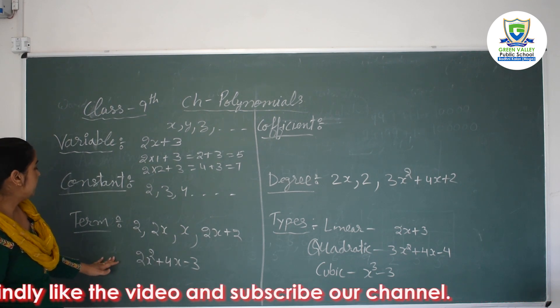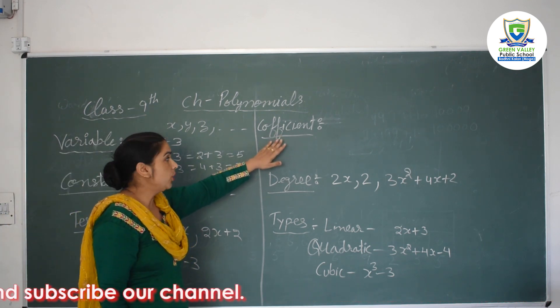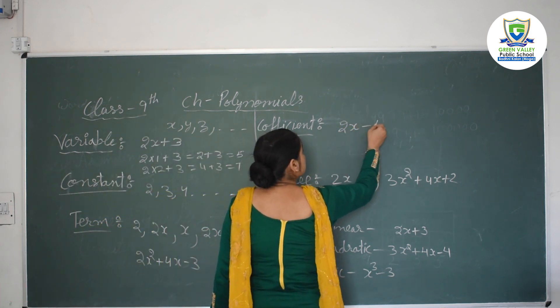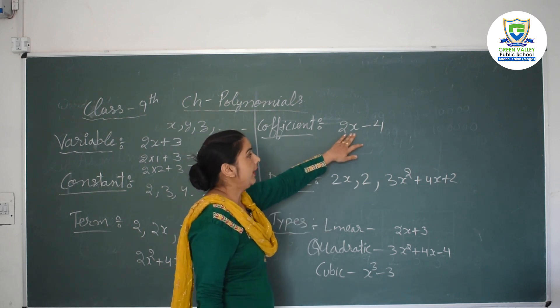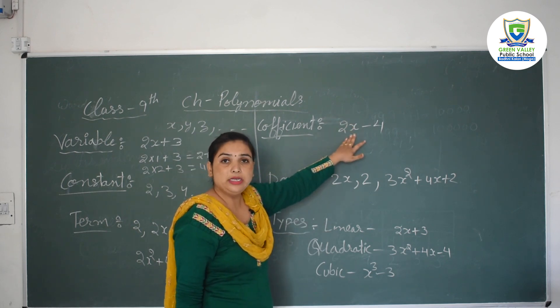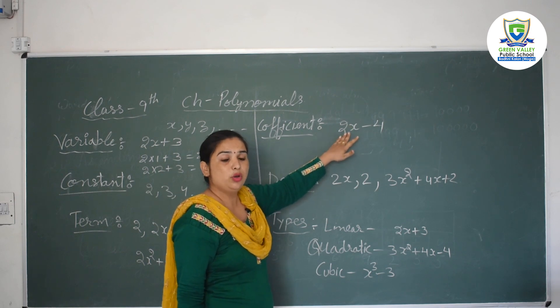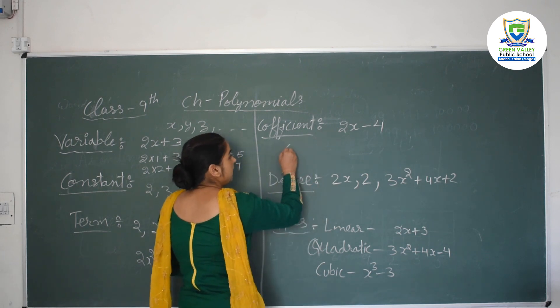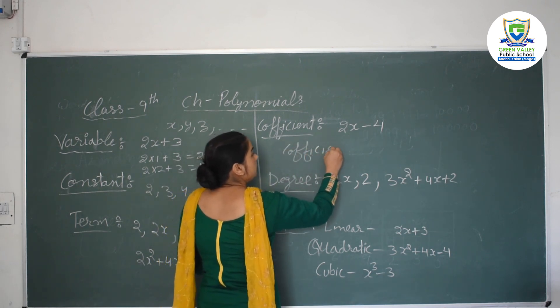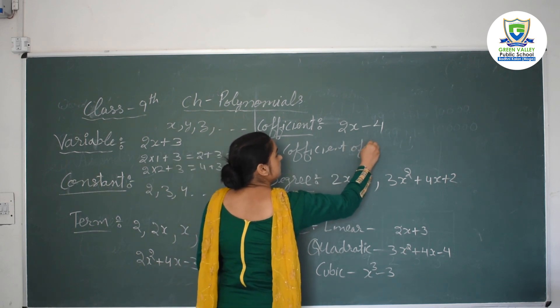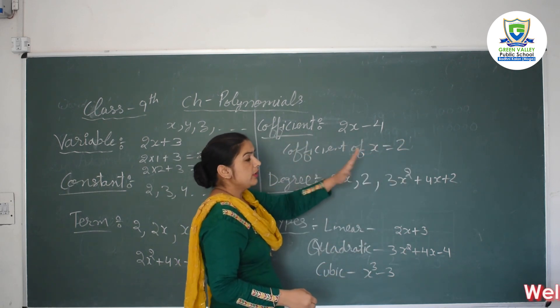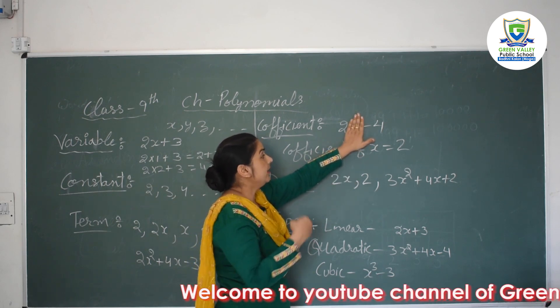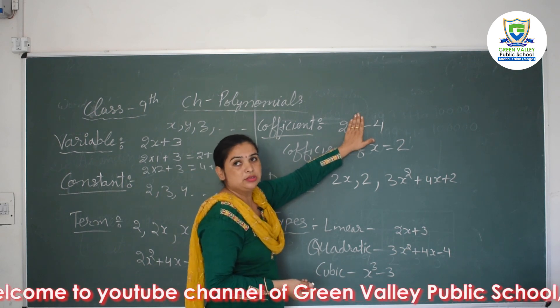And after this students, we have coefficient. What is coefficient? Like here I have written 2x minus 4. If you ask to find the coefficient of x, you have to write what is the number, or we can say what is the constant with it. That is your coefficient. Like here I will write coefficient of x is 2. Or in simple language, if I can tell you by leaving x, what is left in that term, that is your coefficient. Is it clear?